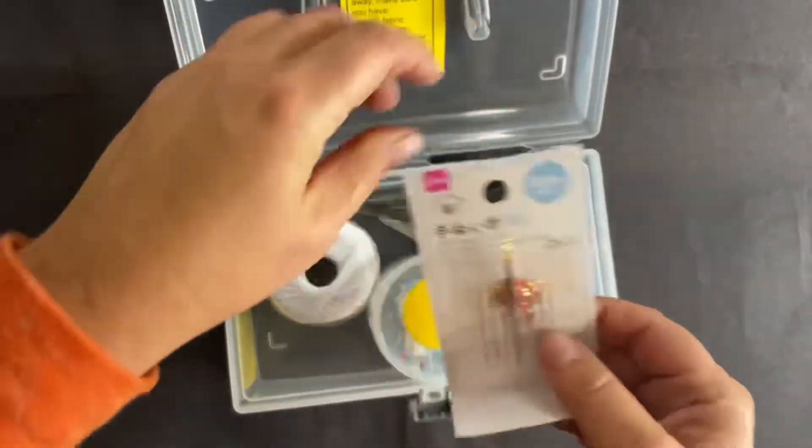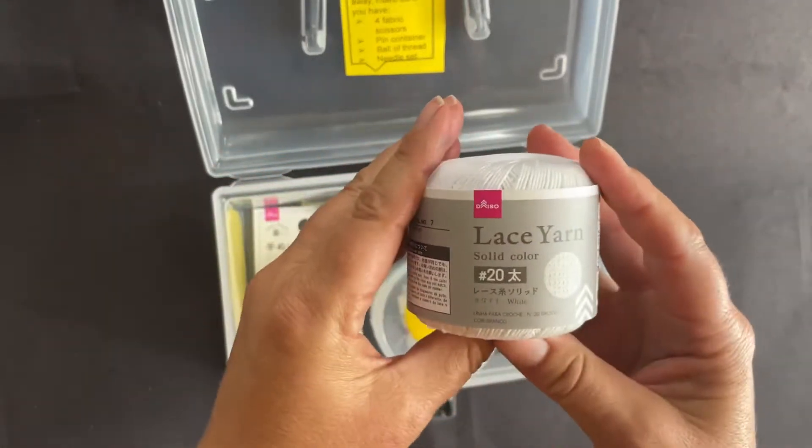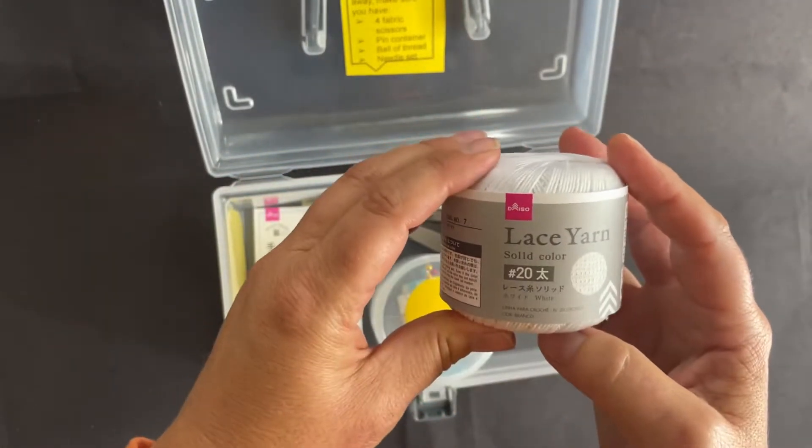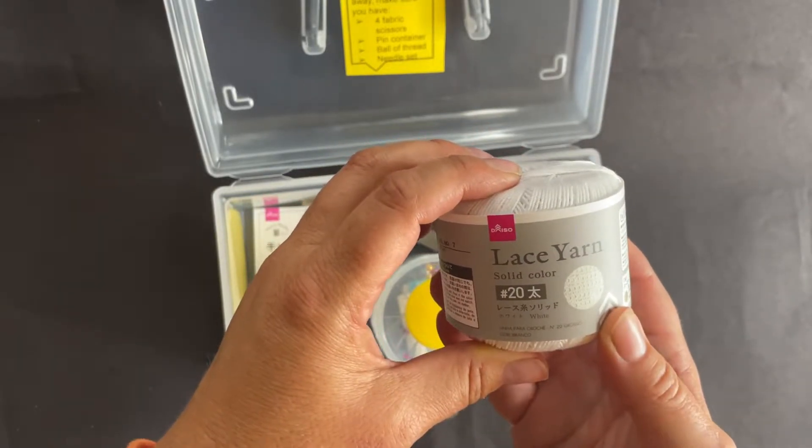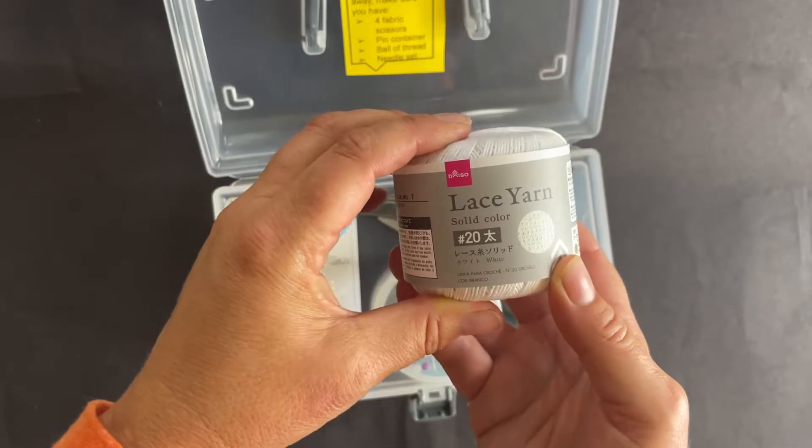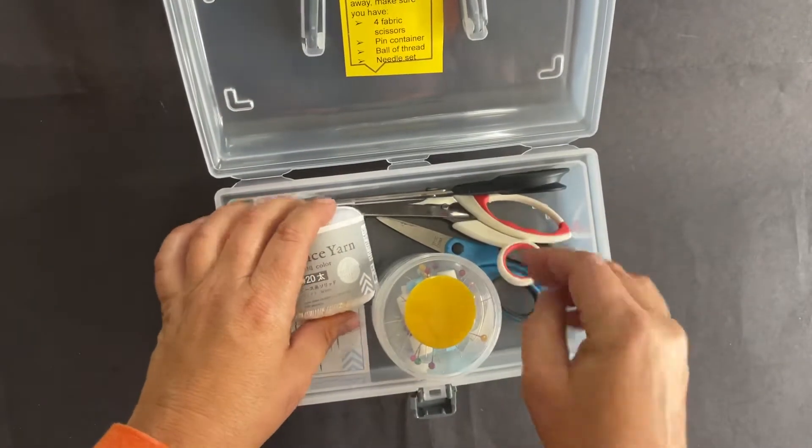There are needles in the box. There are also lace yarn, which I believe was referred to as crochet thread from Cassie Stevens in her video, but this was also available at Daiso. And then I have a couple pairs of scissors in there.